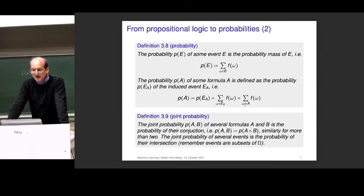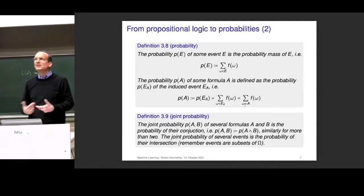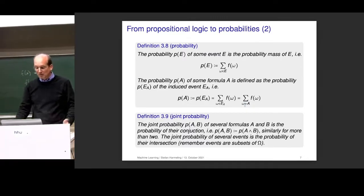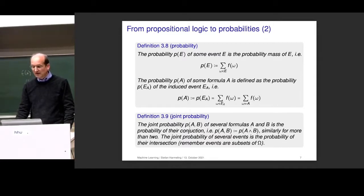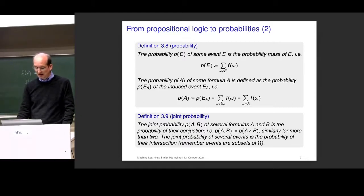Let's come to the notation of having a comma. With our machinery, it's getting really simple: the joint probability for several formulas A and B is just the probability of their conjunction. So a comma can be replaced by an AND sign, and of course we can have arbitrarily many.